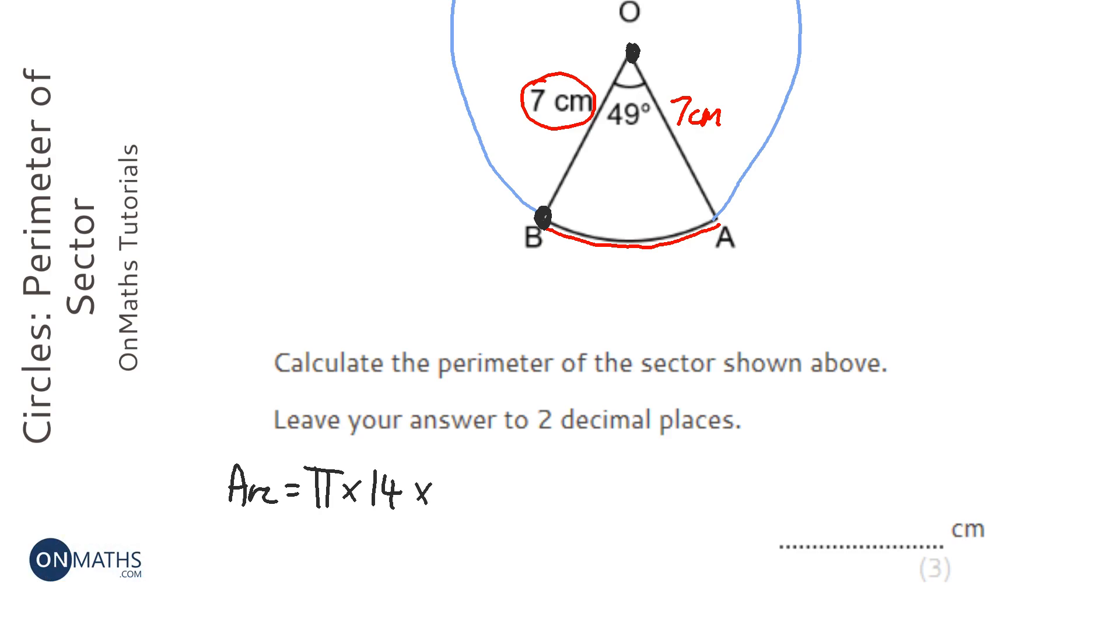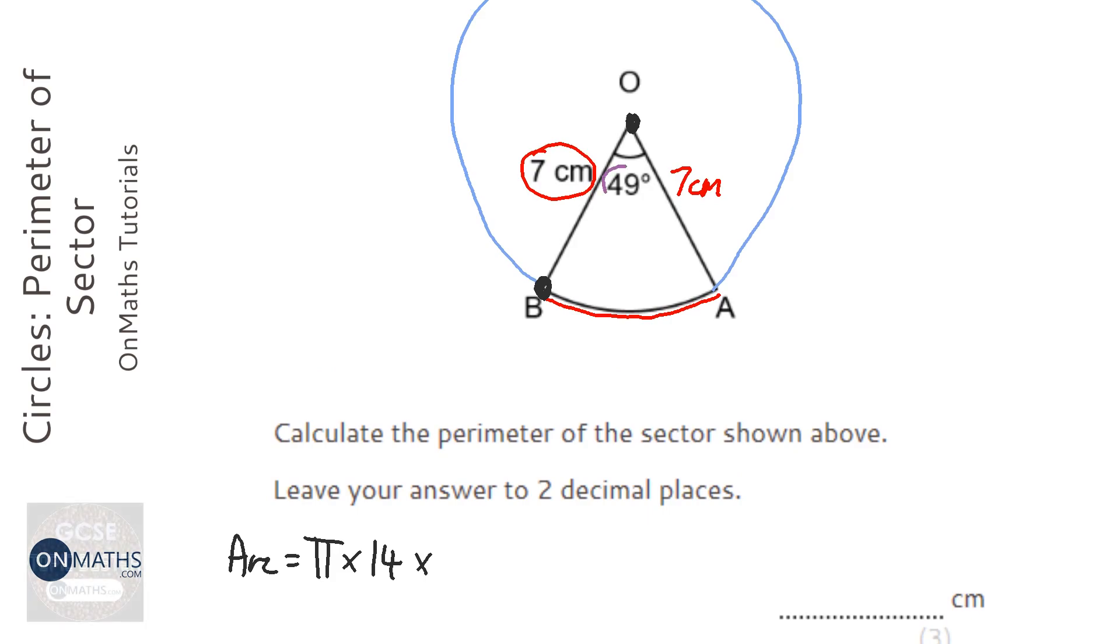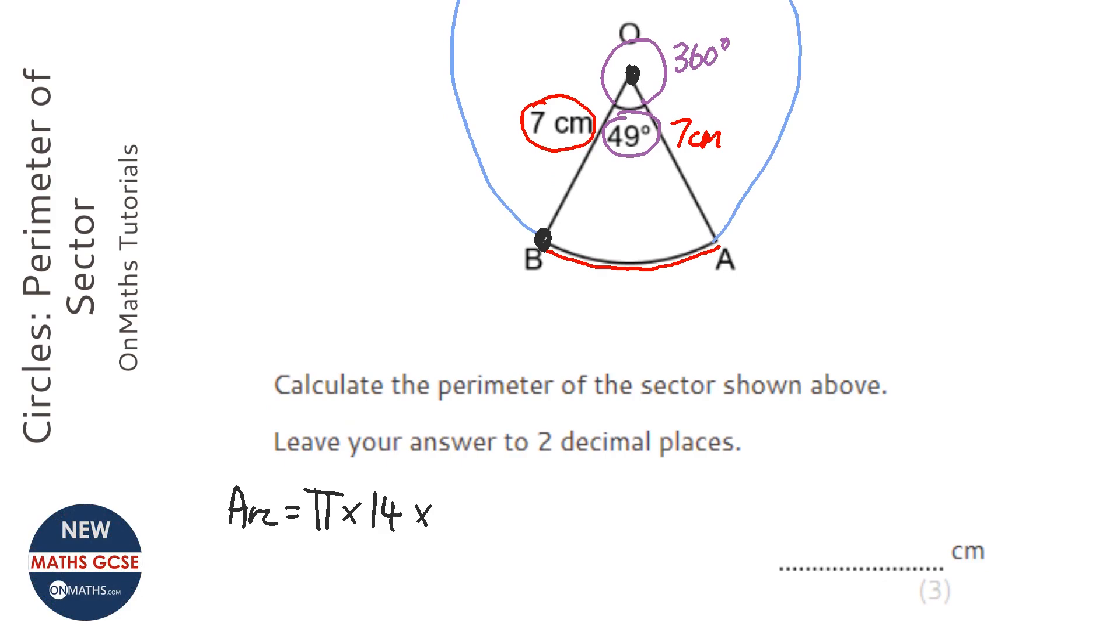But that will give us the whole circumference. And we don't want the whole circumference, we want just this 49 degrees of it. So we need to write that as a fraction. So 49, the total in the circle is 360, therefore as a fraction that's going to be 49 over 360, and it's always over 360 because the circle always adds up to 360 degrees.